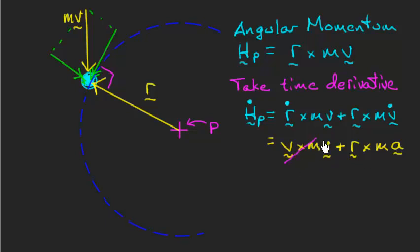In fact, they're the same vector except for one's multiplied by the mass. So whenever we have two vectors that are parallel to each other, their cross product is going to be zero. So this term drops out completely. And then the next term, I have R cross M A.